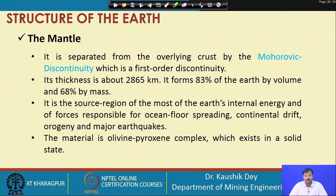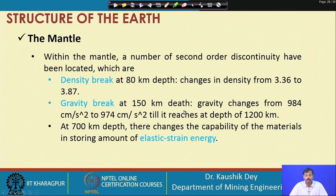The mantle's internal energy is often released through tectonic activities, and it is responsible for ocean floor spreading, continental drift, and major earthquakes. Most of the material comprising it is olivine and pyroxene, which exist in solid state even at high temperatures. Within the mantle, second-order discontinuities exist where stresses build up and energies are released. Density at 80 kilometers depth changes from 3.3 to 3.87, compared to the earth crust's density of around 2 to 2.4.